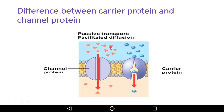For facilitated diffusion, you can use carrier proteins and channel proteins. It is similar to passive transport in that it is a diffusion process. In the diagram, there is a channel protein and a carrier protein. The channel protein provides a direct channel, while the carrier protein catches and holds the molecule.